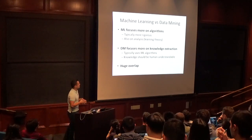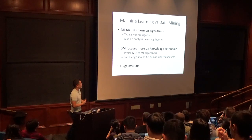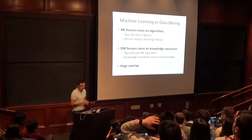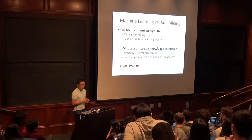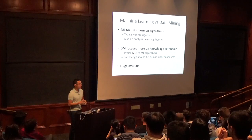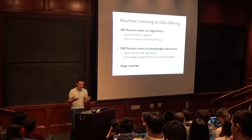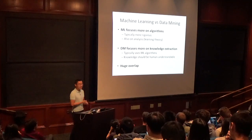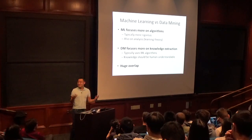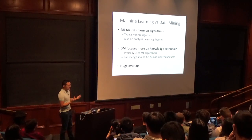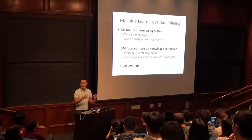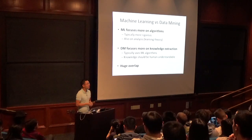Machine learning focuses more on algorithms and tends to be more mathematically rigorous. Data mining focuses more on the knowledge you can extract from a dataset. These days, data mining is also more popularly known as data science — perhaps we should update the name of the class, but that's a paperwork nightmare. Both typically use machine learning algorithms, and the extracted knowledge should be human understandable.